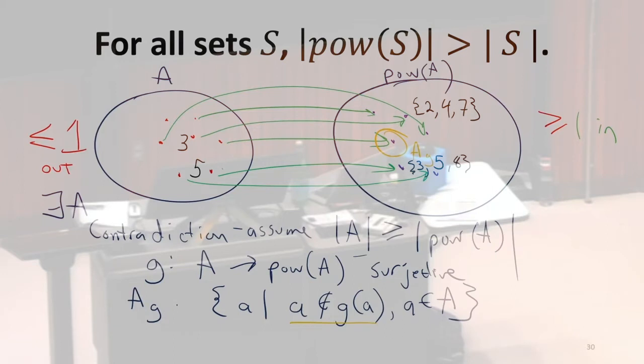For the two examples I've shown you, 3 should be in AG because it maps to the set 2, 4, 7, which doesn't contain 3, and 5 should not be. If this surjective mapping existed, and I'm just making up what it might be, AG is well-defined. So how do we get a contradiction? So far, everything seems okay, maybe sort of okay.